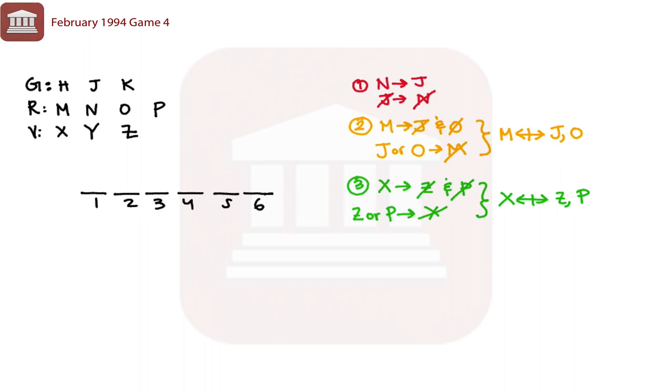So what does that actually tell us? That means since X and Z can't be selected together, the two Vivaldis that will be selected, since there are two that are selected from each, will be Y and then one of X or Z. All right.